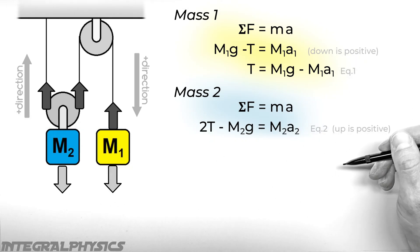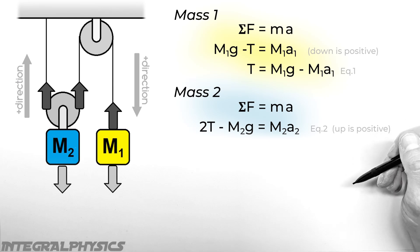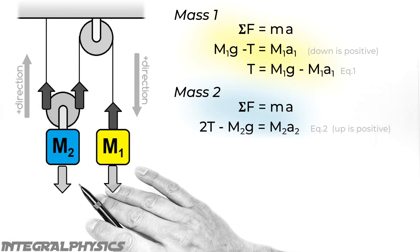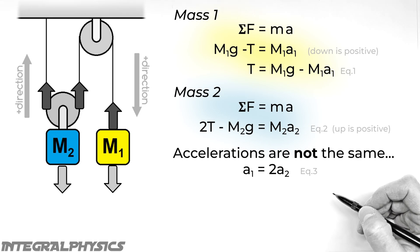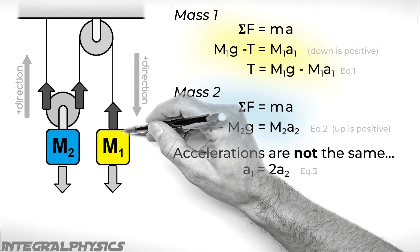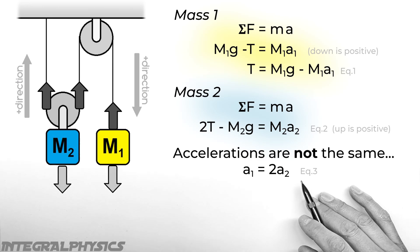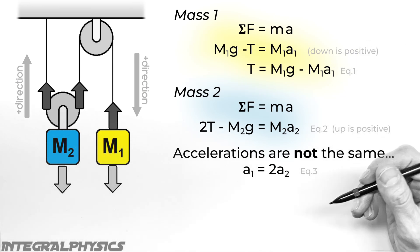Now you'll notice we have two equations, just like we did in the first part of this problem. But now we have three unknowns. We have tension, as well as both of the accelerations. So we're going to need a third equation. And that third equation comes from the driving concept that's governing what's going on here. That is that our two accelerations are not the same. In fact, A1 is going to be double or two times A2. So we're just going to represent that as a function here. And so what we have now are three equations and three unknowns.